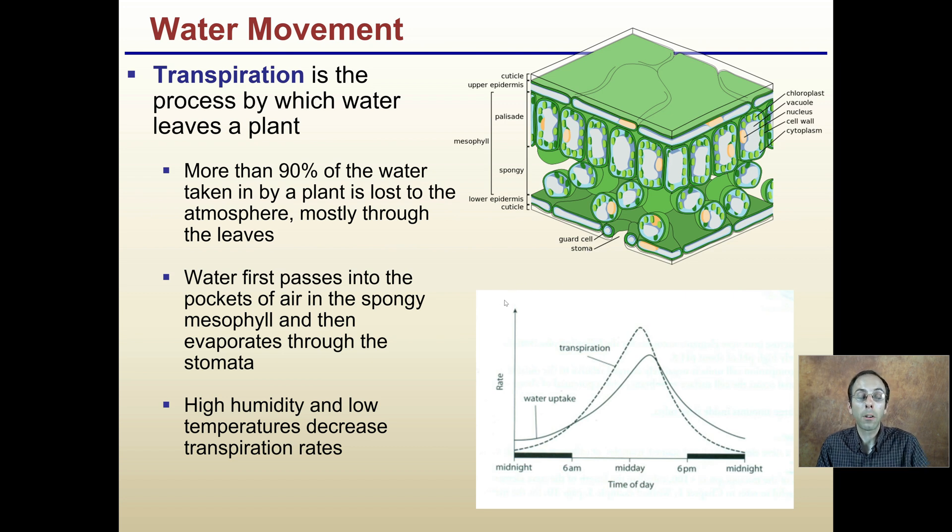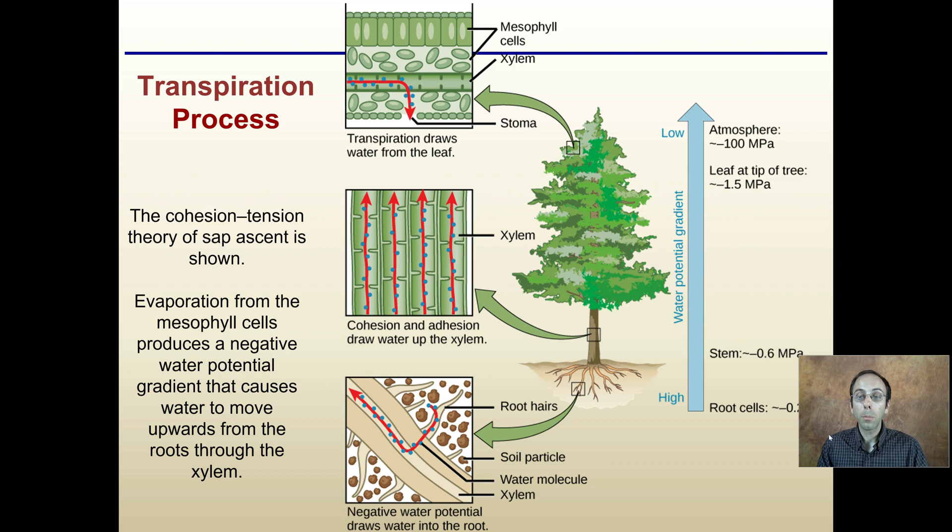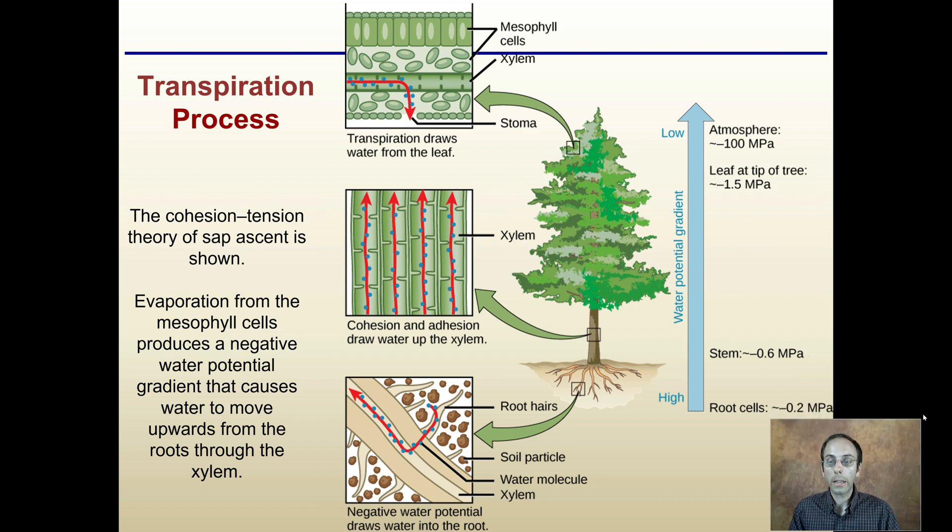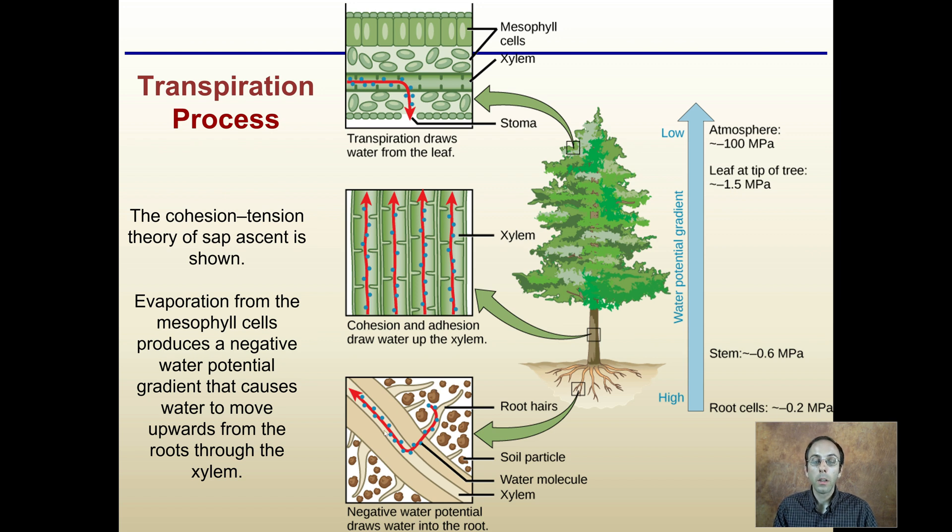The transpiration process in general, looking at a tree or even houseplants: the cohesion and tension theory of sap ascent is shown where water comes in through the root hairs, those really fine areas, and then enters the xylem. Then it works its way with cohesive and adhesive properties, drawing water up through the xylem, ultimately reaching the leaves, reaching the mesophyll cells, and then ultimately leaving out the stomata. Evaporation from the mesophyll cells produces a negative water potential gradient that causes water to move upward through the roots and ultimately through the xylem.